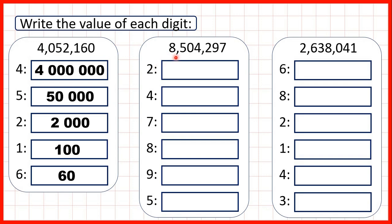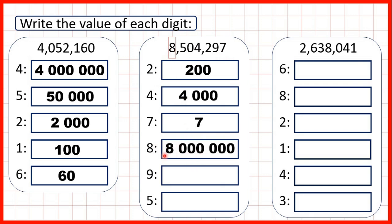Now we have eight million five hundred and four thousand two hundred and ninety seven. So first we need to find the value of the two. That's in our hundreds place value so it stands for two hundred. Now the four is in our thousands so that's four thousand. The seven is in our ones so that just stands for seven. The eight is in our millions so that's eight million — eight with six zeros on the end because we have six digits, or six place values, after the eight in our millions.